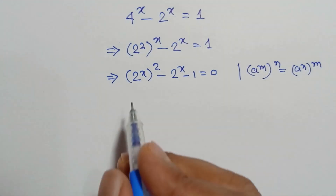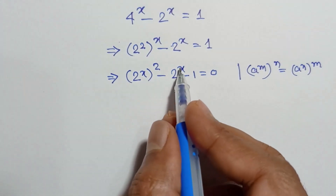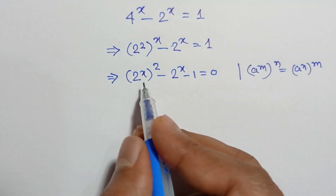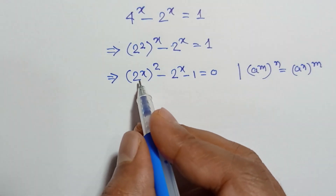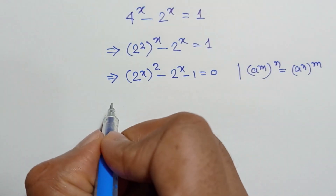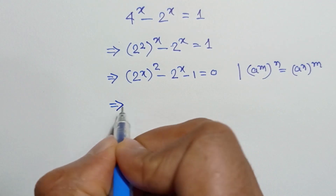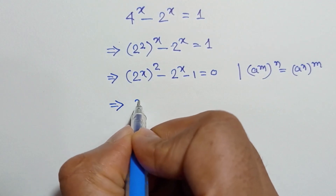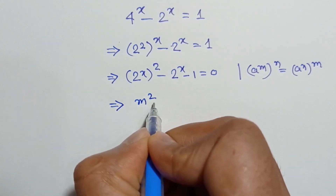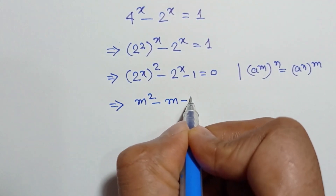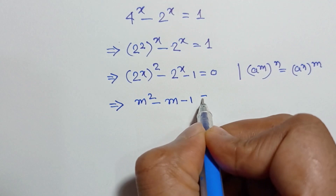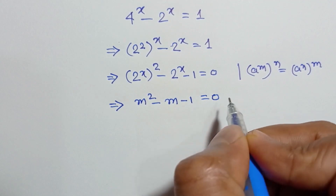Here 2 to the power x and 2 to the power x are the same. So let 2 to the power x equal m. We get m squared minus m minus 1 is equal to 0.